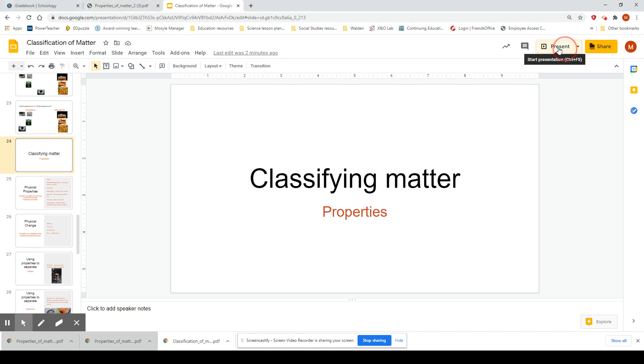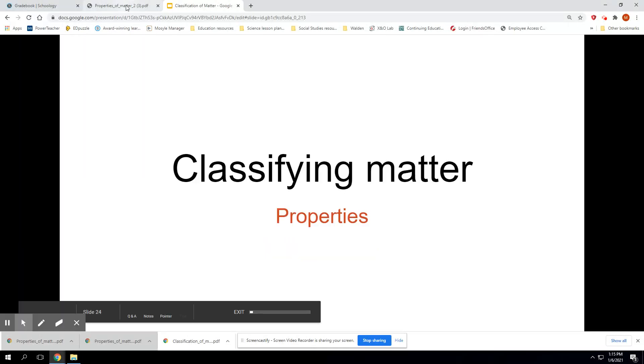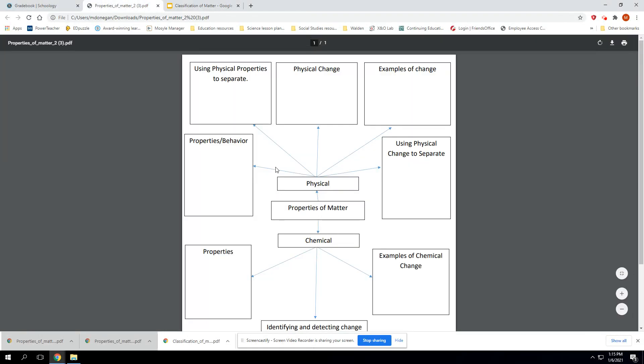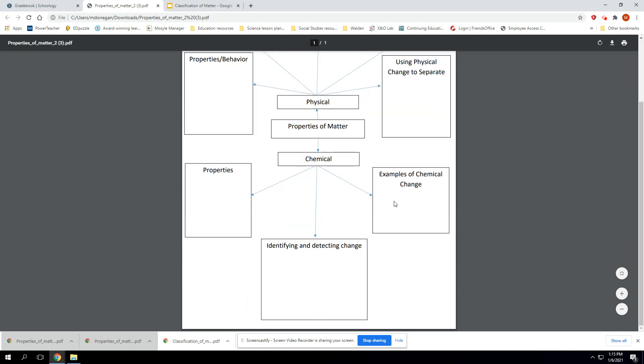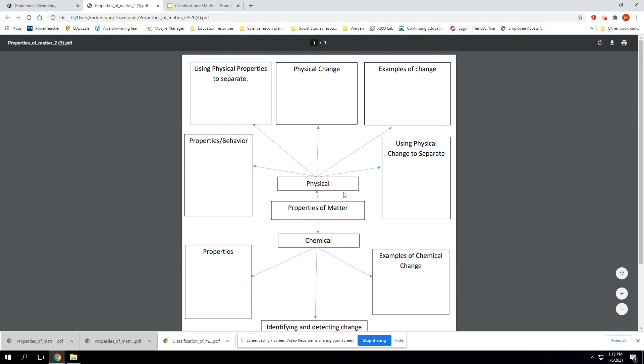Alright, this portion of the video is going to take us through the classification of matter due to properties. So last time we classified matter. You're going to open up this document, it looks like this, and we're just going to put some information into these boxes. We have properties of matter, the top half is going to focus on the physical properties, the bottom half is going to focus on chemical properties.